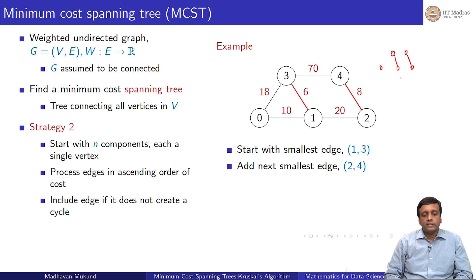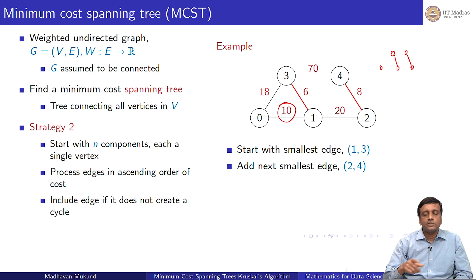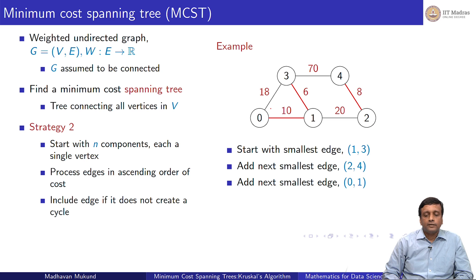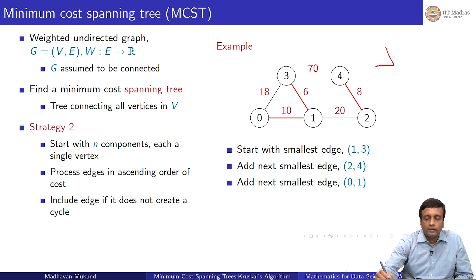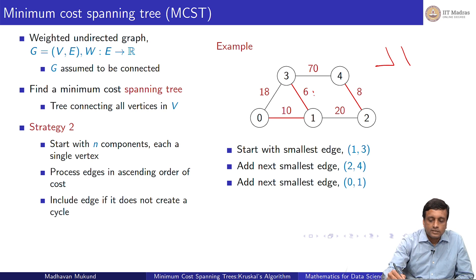The next edge is 10, which will connect 0 to 1, so I am allowed to add it. Now I have this situation where the graph is still disconnected, it is not a tree yet. I have processed edges of weight 6, 8, and 10. The next edge in ascending order of cost is 18.